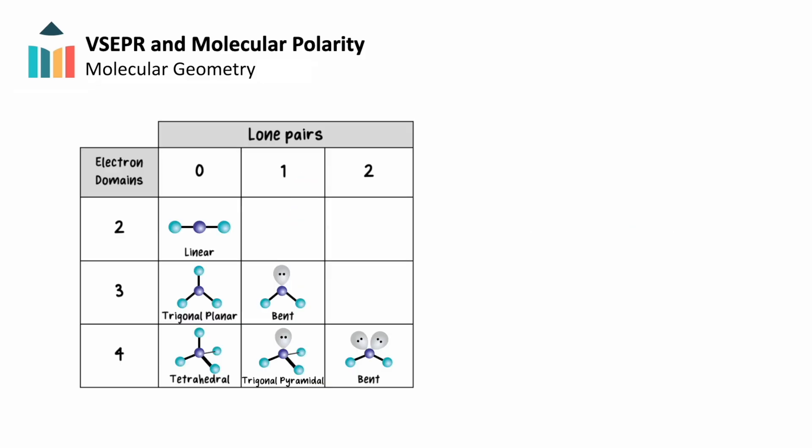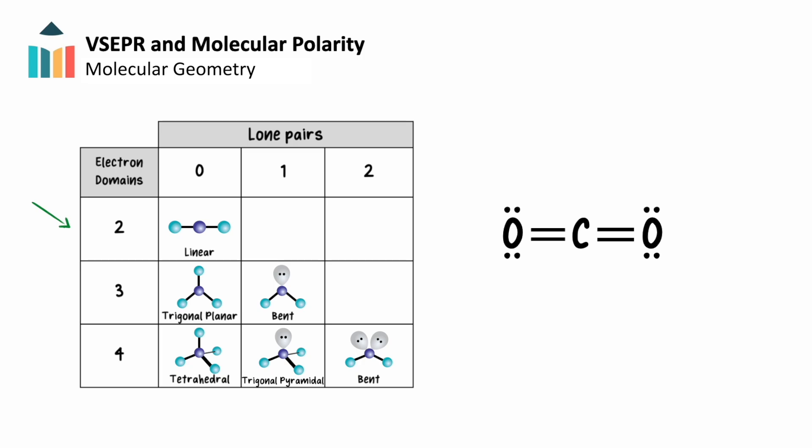We can organize possible molecular geometries into a chart that allows us to see the relationship between electron domains and the number of lone pairs around a central atom. Here are the molecular geometries for three and four electron domains. We also have a row for two electron domains. An example of this would be carbon dioxide, CO2. Carbon dioxide has two domains around its central carbon atom. VSEPR theory tells us that the molecule will appear linear, with a bond angle of 180 degrees, to achieve maximum separation between the two electron domains.